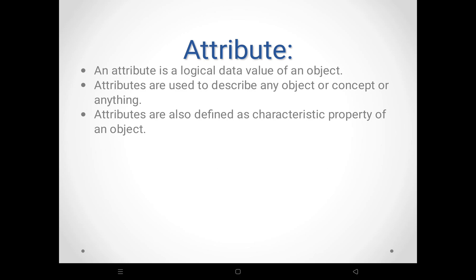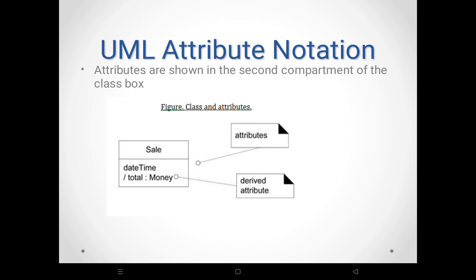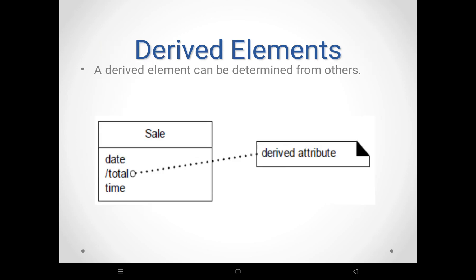Attributes are the second compartment of class notation. An attribute is the logical data value of an object, and attributes are used to describe any object or concept. They are also called the property of an object. For example, the Sale class has attributes: Date, Time, and Money. There are two types of attributes: simple attributes, which are primitive data types, and derived attributes, whose value can be derived from other classes. Derived attributes are always preceded by a slash symbol — for example, Total is a derived attribute.